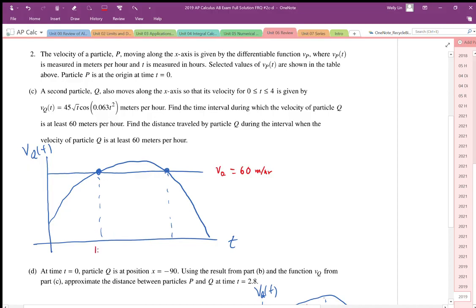We find these intersection points by intersecting those two lines on the graphing calculator, and I get 1.8662 hours, and we also get 3.5192 hours as well. So that's the first part. So find the time interval, so t is going to be between 1.8662 and 3.5192.